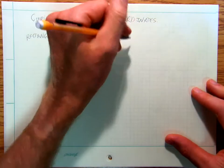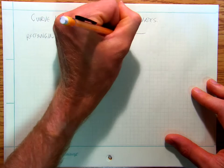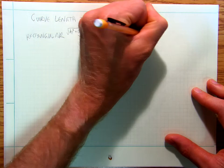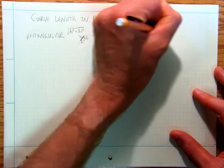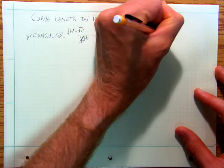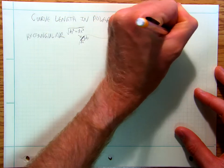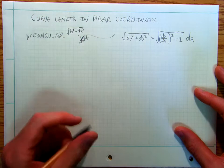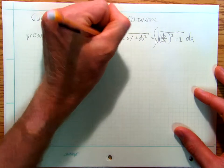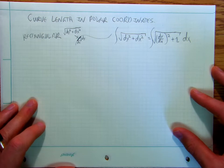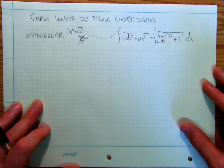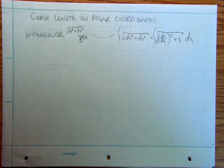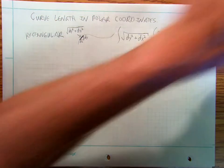So we write the square root of dy squared plus dx squared as the square root of (dy/dx) squared plus one, times dx, and then we integrate that to find the entire curve length. I have another video on curve length in rectangular coordinates that you might want to go back and look at.